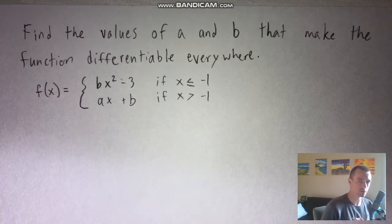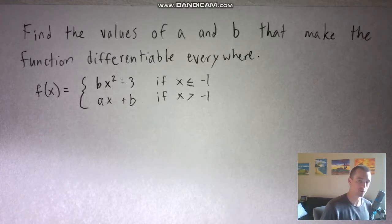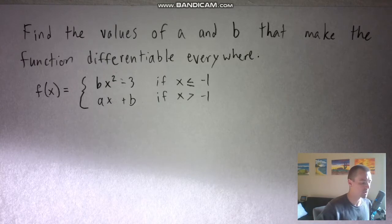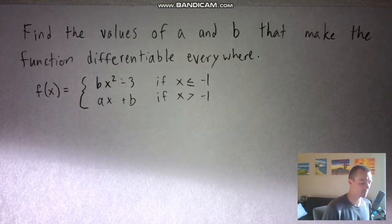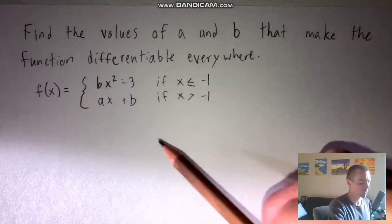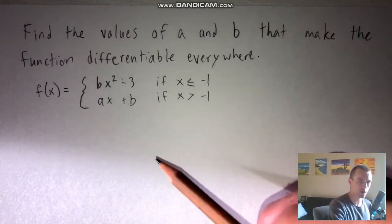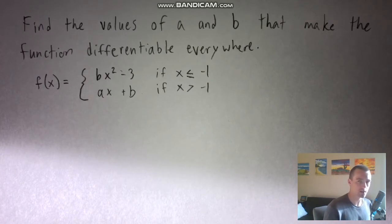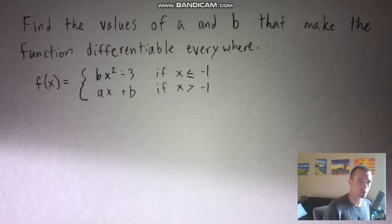First of all, you need to make sure that your function is continuous everywhere, and then once you make sure that the function is continuous, you can make sure that it's differentiable everywhere. So there's those two different things we want to keep in mind as we go through this problem. I'm going to go over a shortcut method for solving a problem like this, so I'm not going to get into the limit definition of continuous or differentiable. I'll just show you the shortcut that makes it a lot easier.